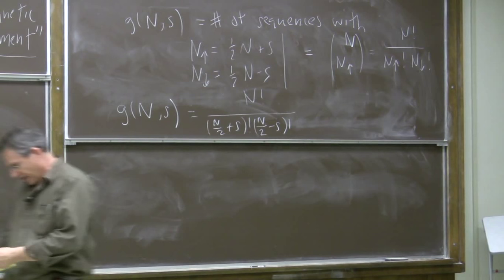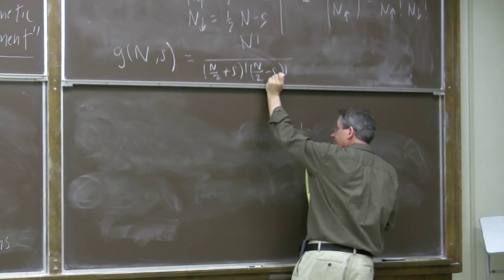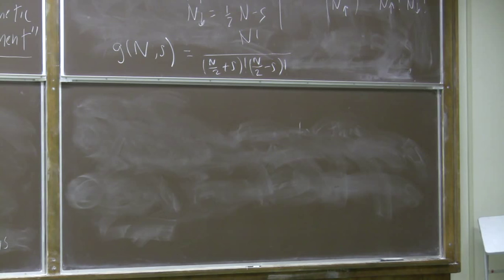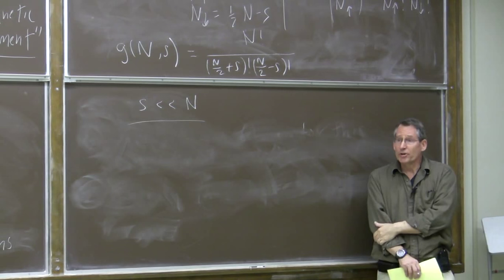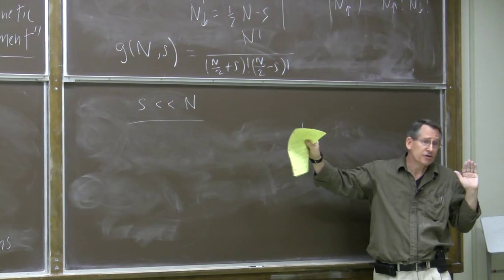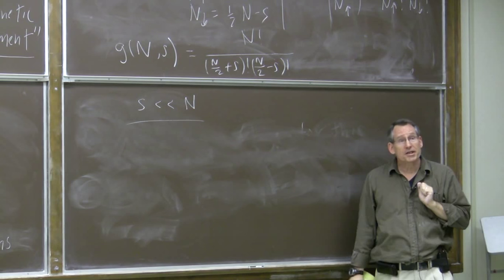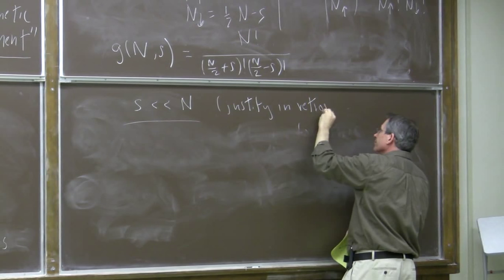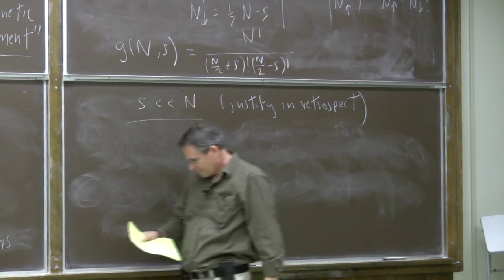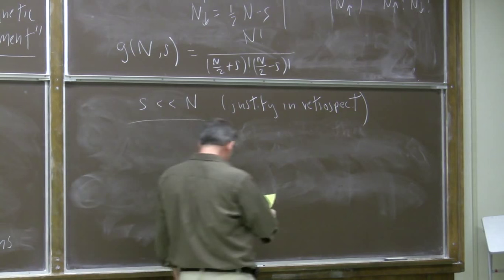To understand how this quantity behaves as s varies, we're going to make an approximation because we'd like to see this sharp Gaussian emerging. I'm going to suppose that s is small compared to n — we'll be able to justify that in retrospect when we see what the answer is. It's just saying that very large fluctuations are extremely rare, so forget about them. We'll also make use of the Stirling approximation.